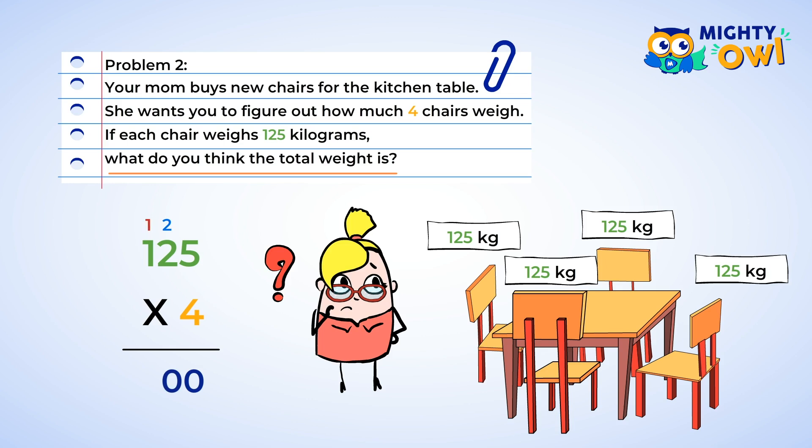And the final step, the hundreds place. One multiplied by four is four. Then we add the little one to get five. Great. Now, we put five in the hundreds place in our answer, and that gives us 500 kilograms. Mom, how are we going to get that up the stairs?